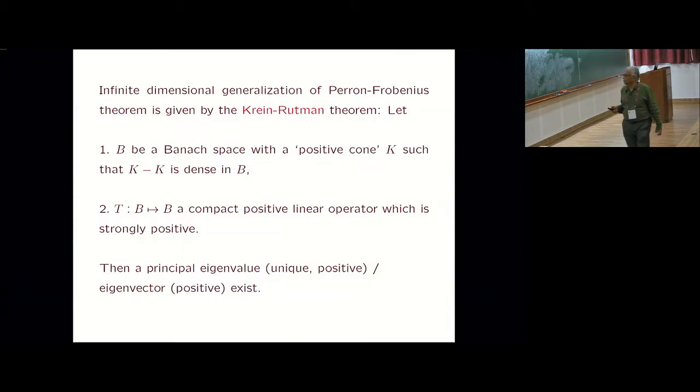You look at a compact positive linear operator which is strongly positive. Strongly positive means given a non-negative element in K, it will map it into an element in its interior. Then the counterpart of Perron-Frobenius theorem: there's a principal eigenvalue, unique positive, and there's a corresponding positive eigenvector.